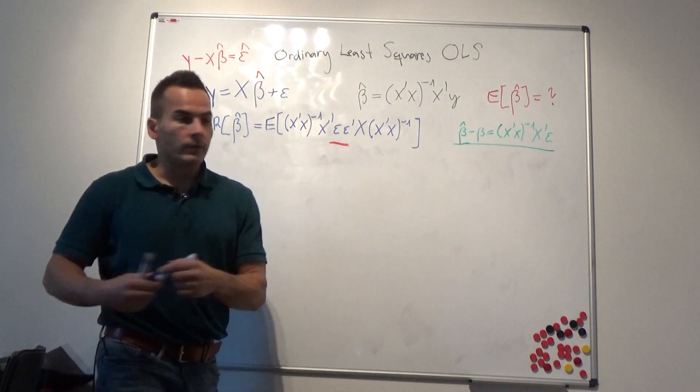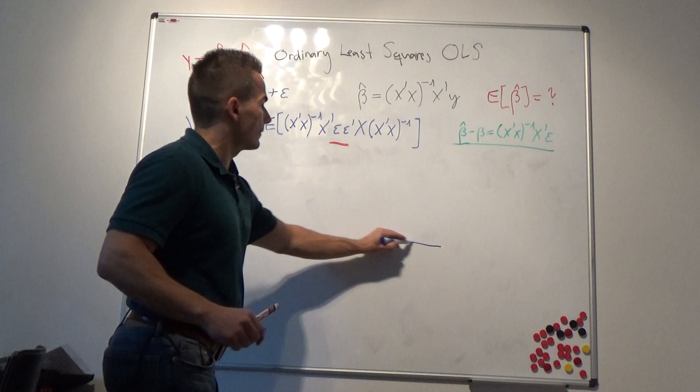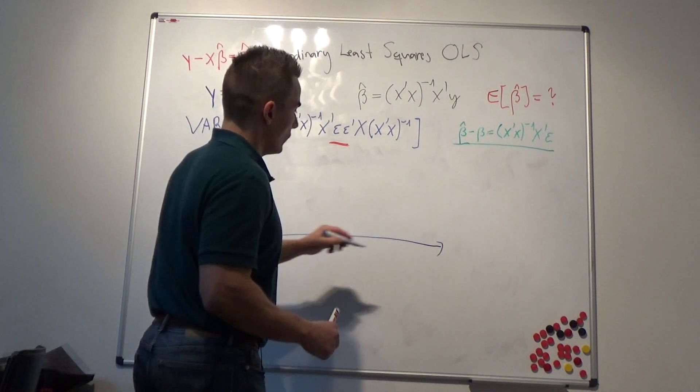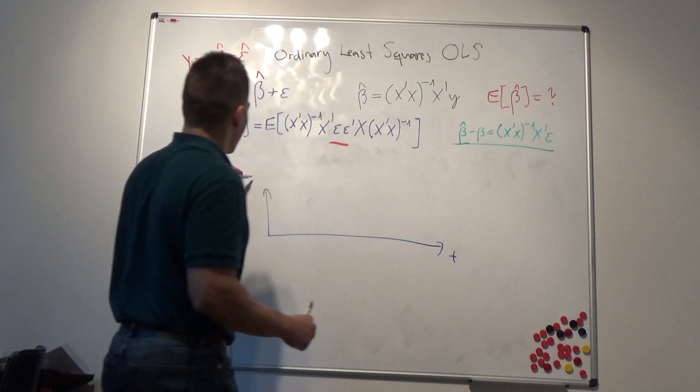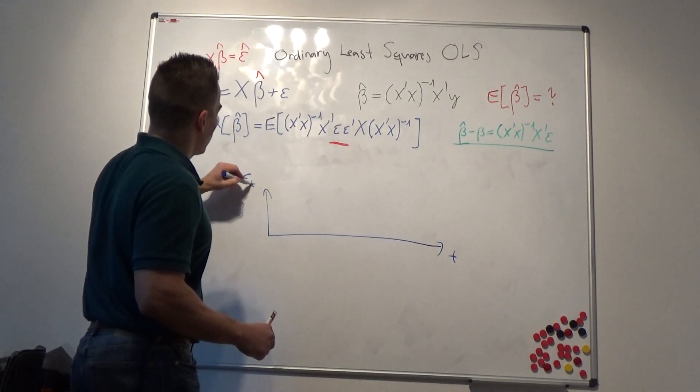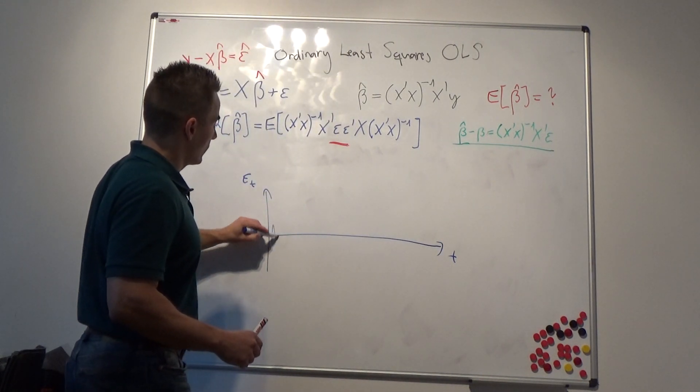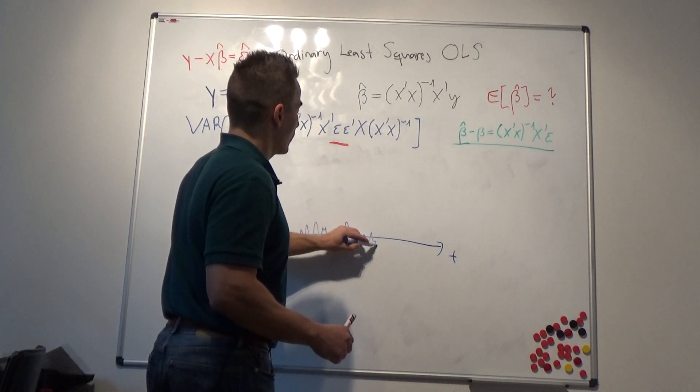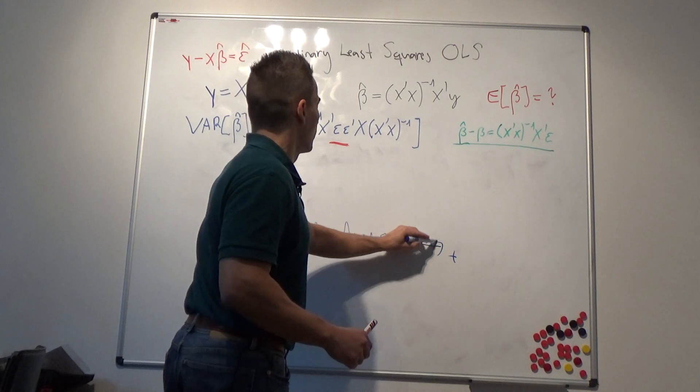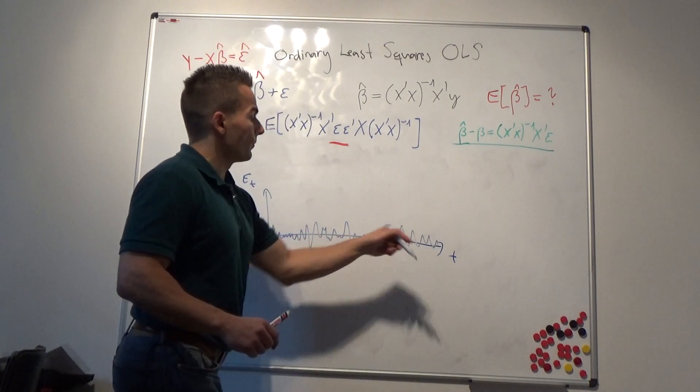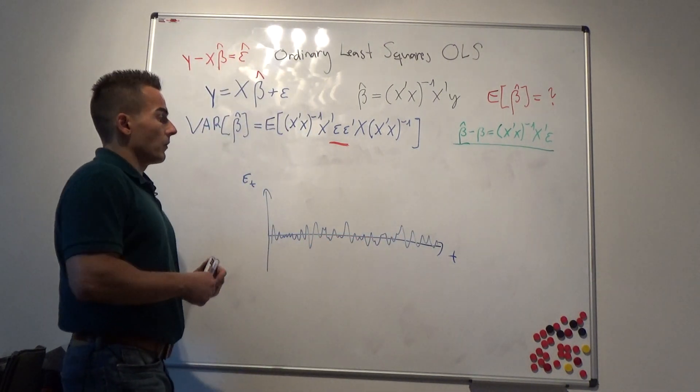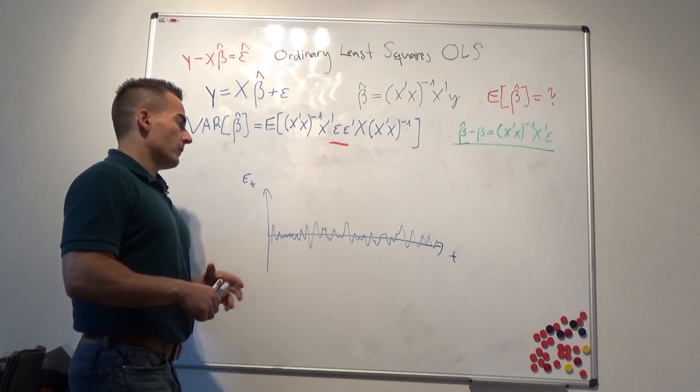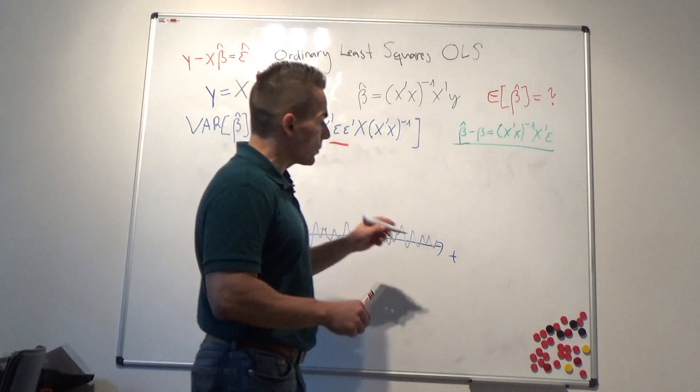Our epsilon_t needs to be sort of a white noise process. There should be no systematic pattern. It should circulate around zero, and the variance should be the same for our residuals. So these are very strong assumptions.